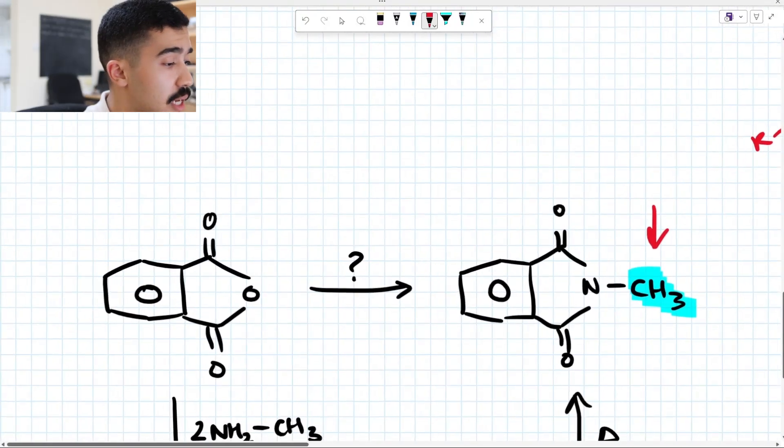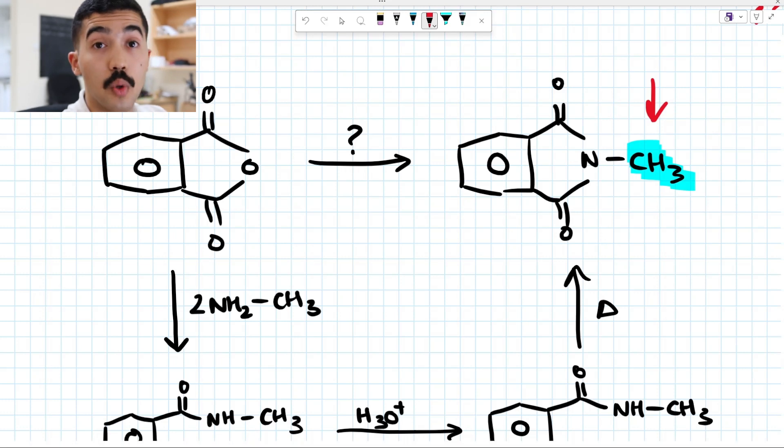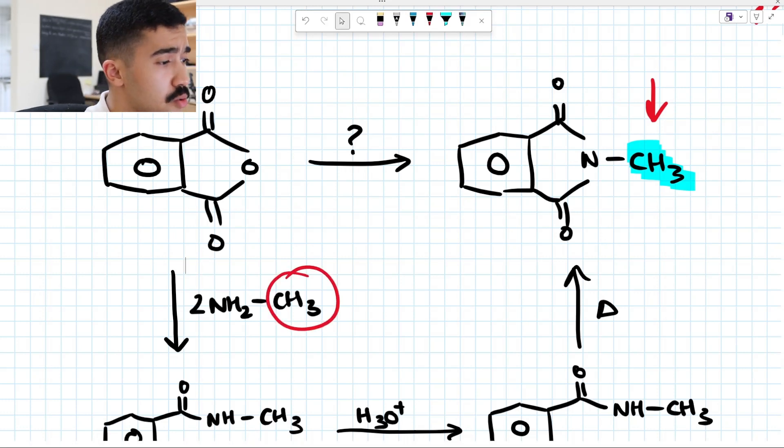Well, what did I say? The last step, all you want to do is instead of using 2NH3, you're going to use 2NH2R, where R in this case is our CH3. And the process continues as normal.